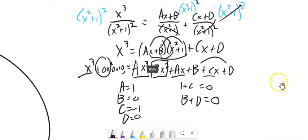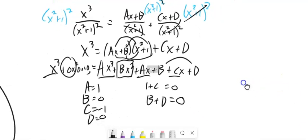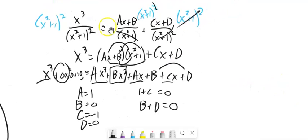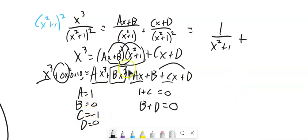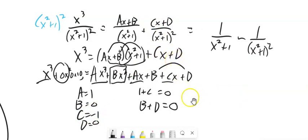Plugging back in: a is 1, b is 0, c is negative 1, d is 0. So this rewrites as x over x squared plus 1 minus x over x squared plus 1 squared.